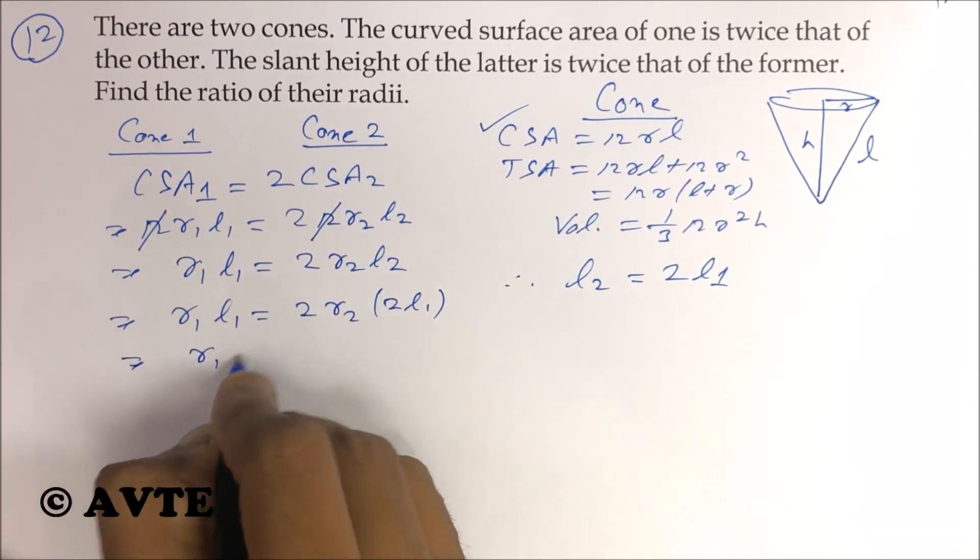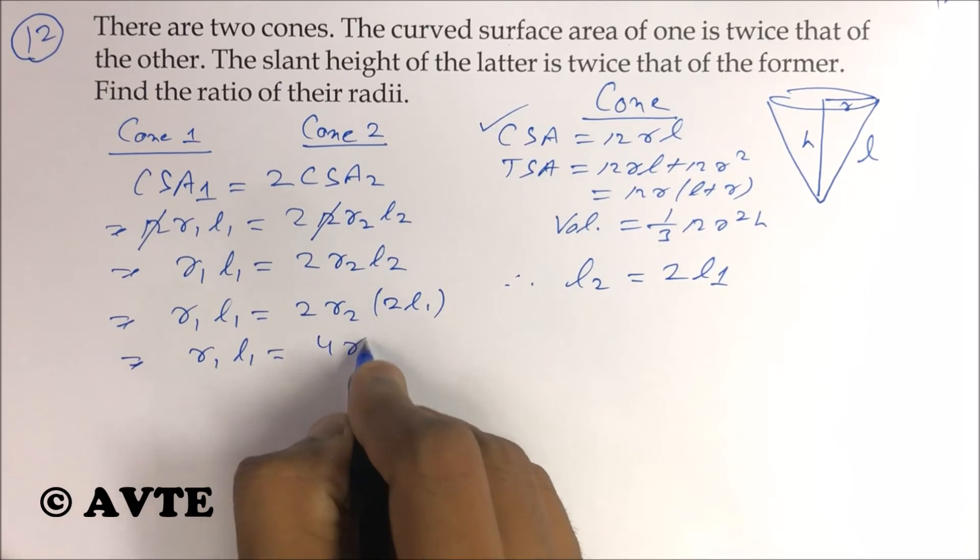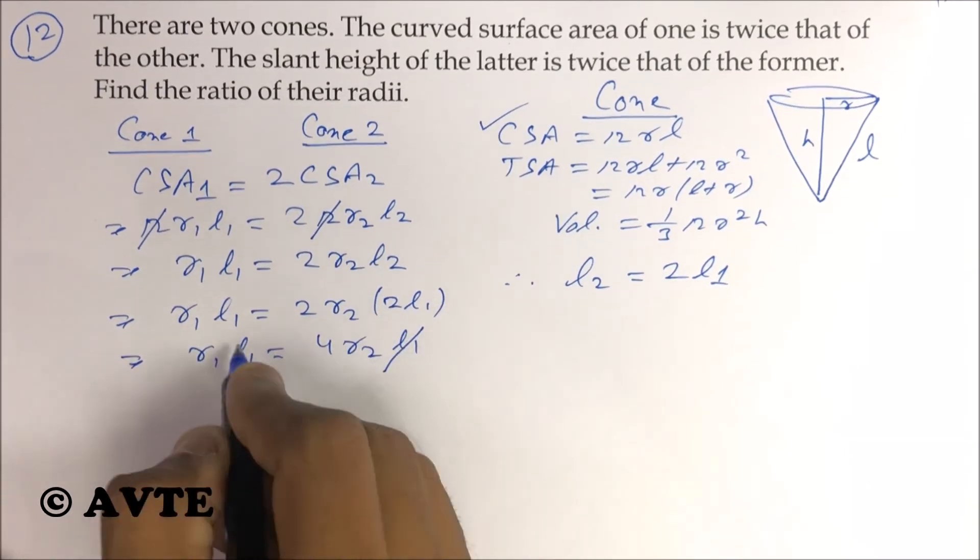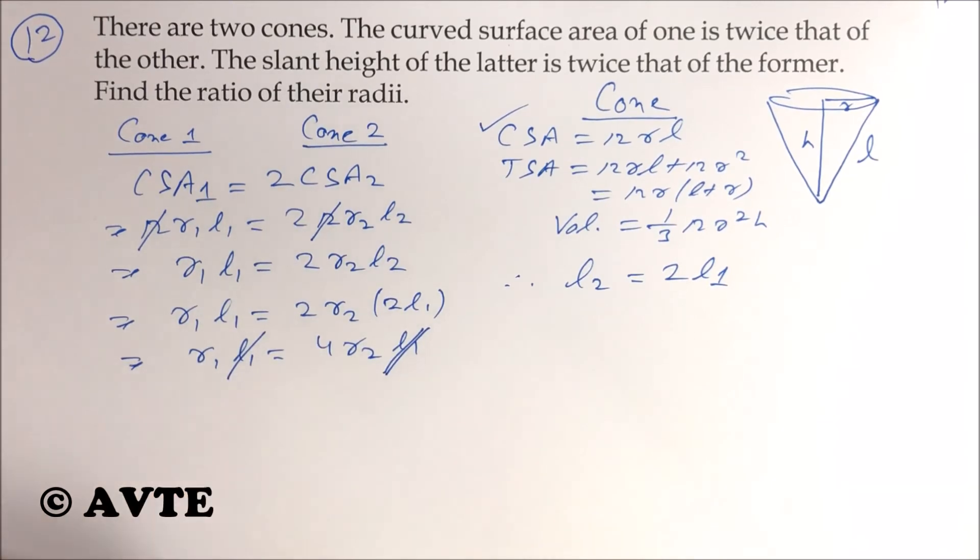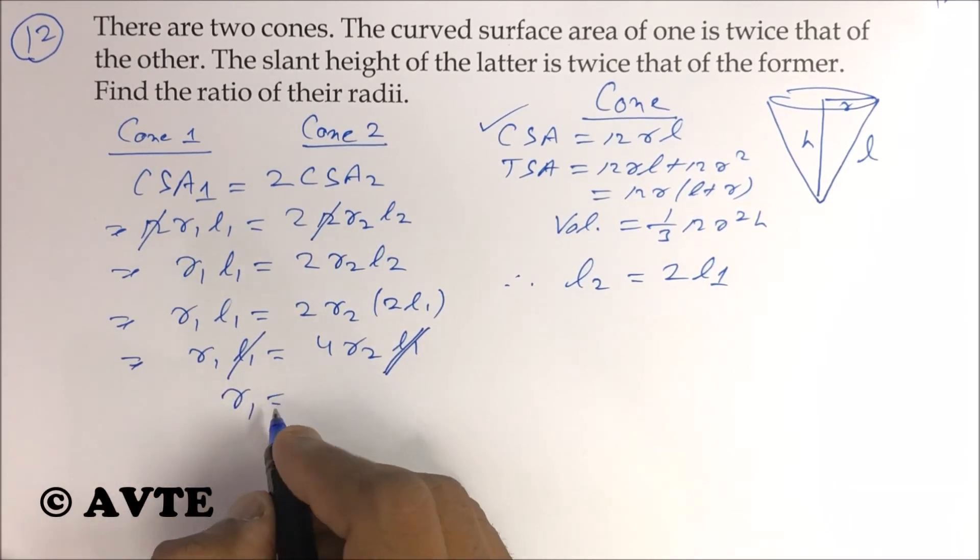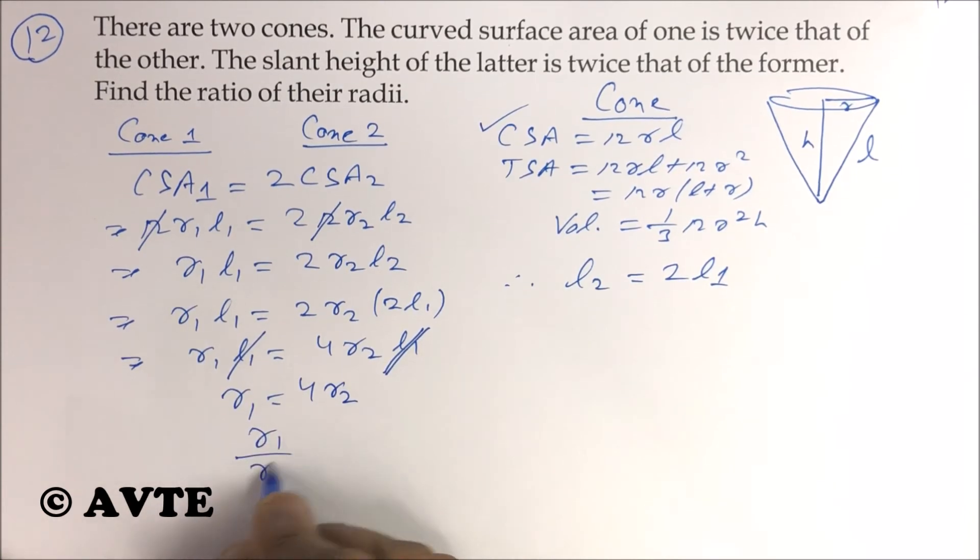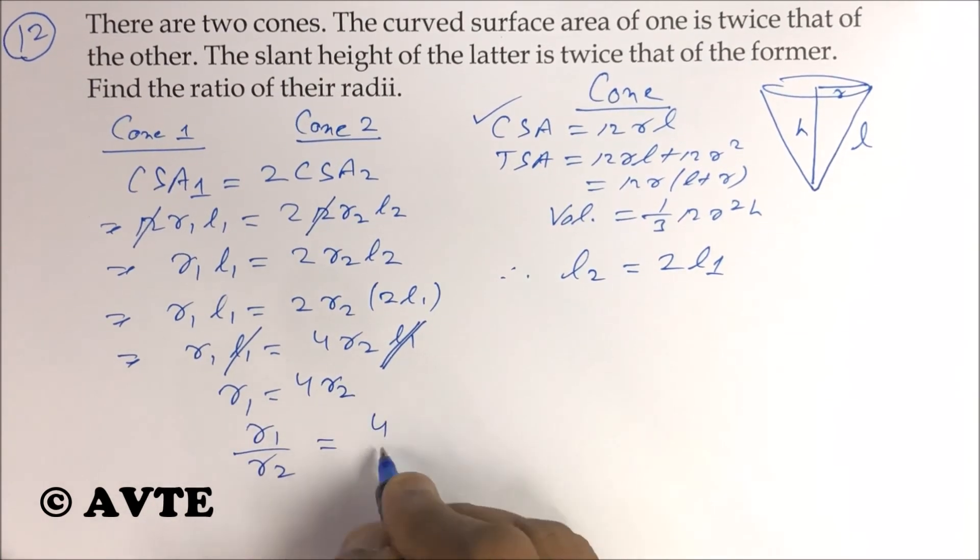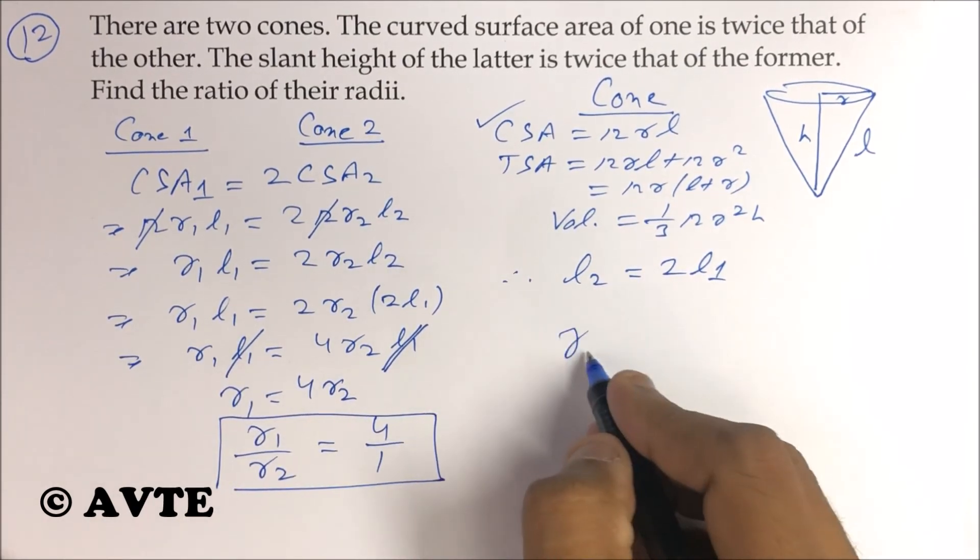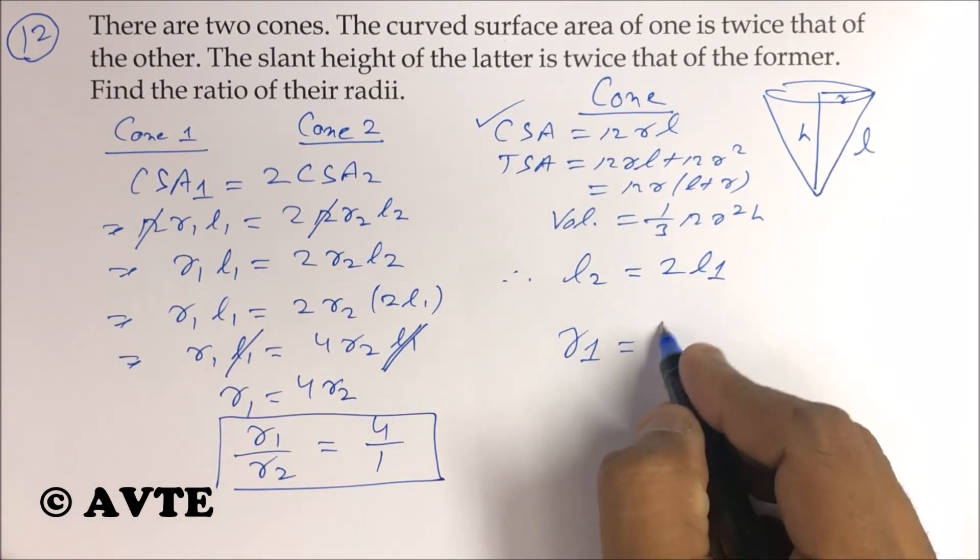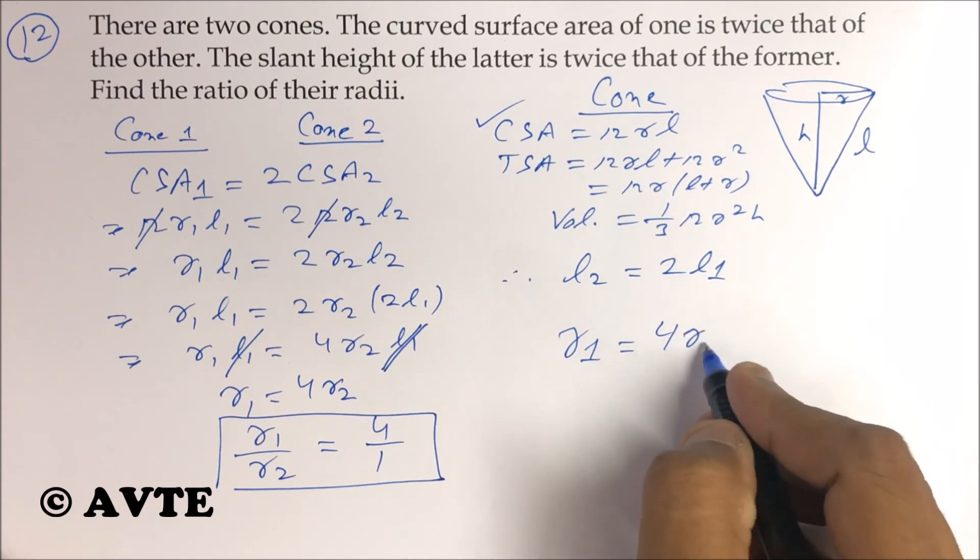It means r1 L1 is 4 r2 L1. So r1 is 4 r2. It means r1 upon r2 is 4 to 1. Or we can say that the radii of the first cone is 4 times the radii of the second.